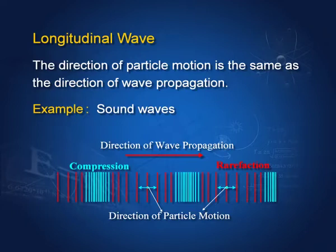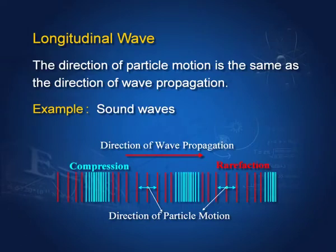Here is a longitudinal wave. The direction of propagation of the wave is to the right, and because the particles oscillate like this, they get bunched. Somewhere the density increases and somewhere the density decreases. Where the density of these particles increases, we have compressions. Where the density of these particles decreases, they are further apart — that is a rarefaction. So in a longitudinal wave, we have compressions and rarefactions and the wave travels along.